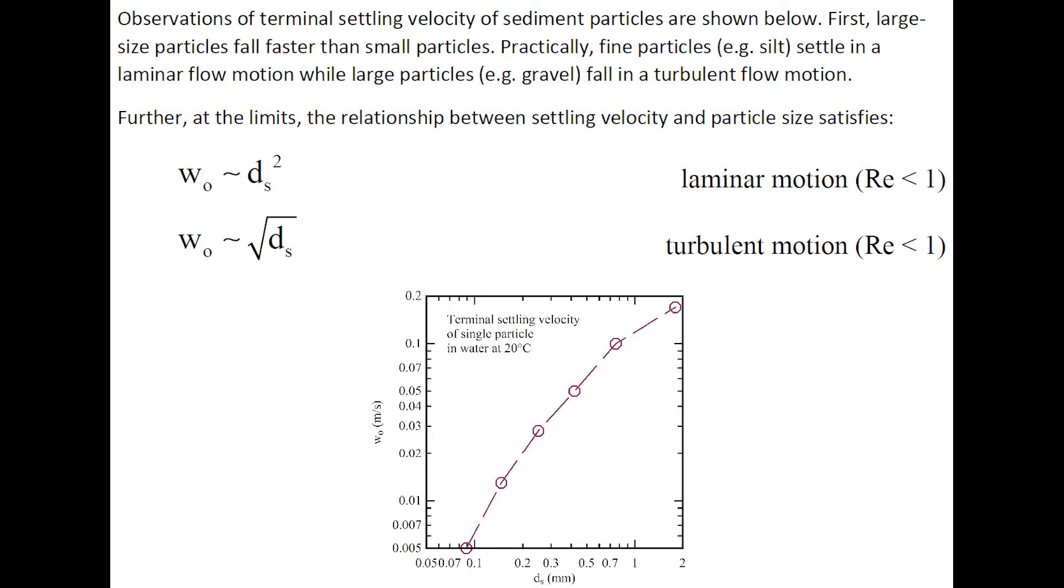At the limits, the particle fall velocity is proportional to the square of the particle size for laminar motion, and proportional to the square root of the particle size for turbulent motion.